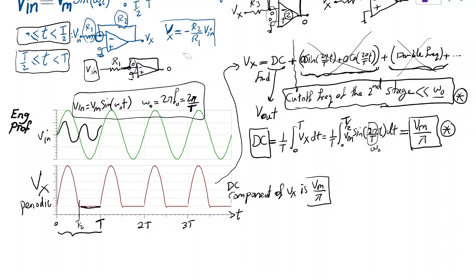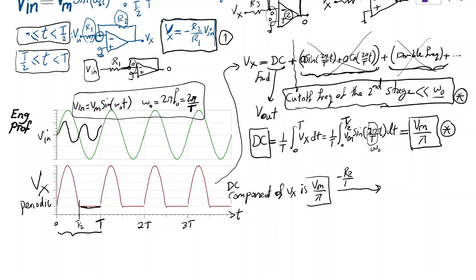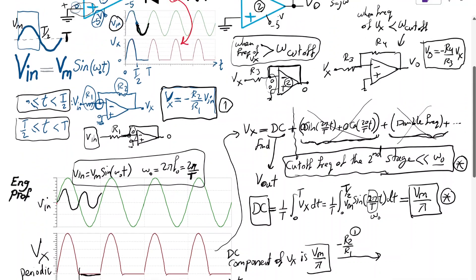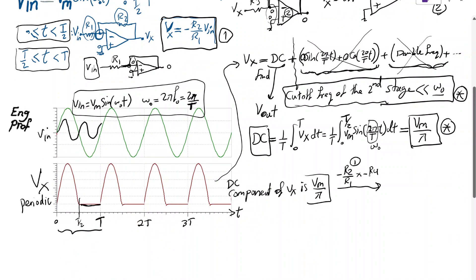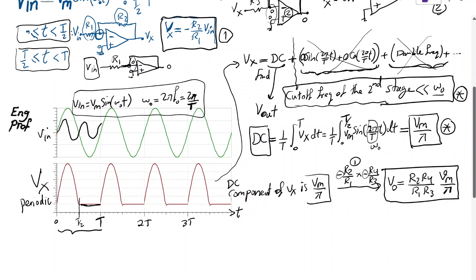Combining the gains of both stages: from equation 1, VX = -(R2/R1)*Vin, and from equation 2, Vout = -(R4/R3)*VX. The two negatives cancel, giving Vout = (R2*R4)/(R1*R3) * Vm/pi. This is the proof of the key result for this circuit — a beautiful property.